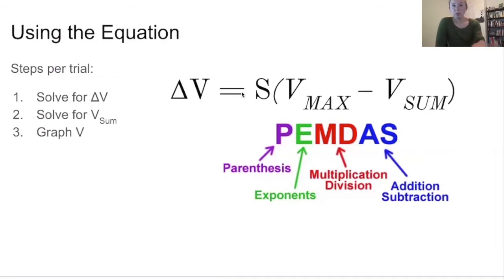The one thing I want you to remember, I've got the equation again here, is we're going way back to our sixth grade math right now and remember PEMDAS. So this is the order of operations. We always are going to start with parentheses. So what's inside the parentheses is going to be done before anything else. The parentheses make the addition and subtraction of V max minus V sum come before the multiplication of the salience times that difference. So that's an important thing to remember as we go through this.